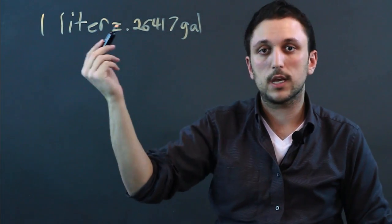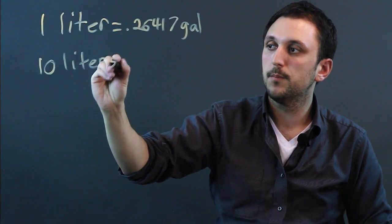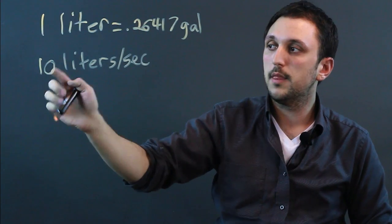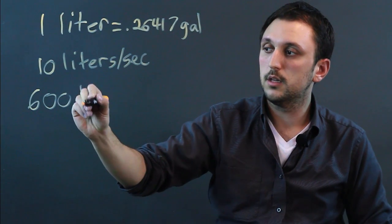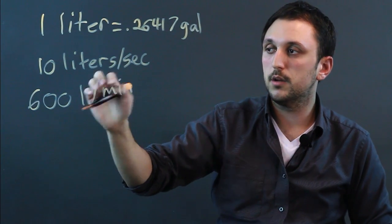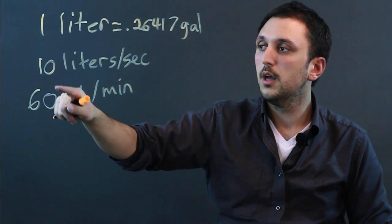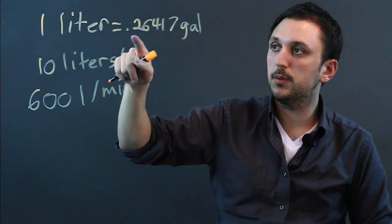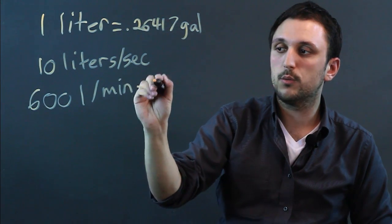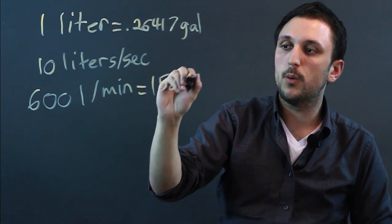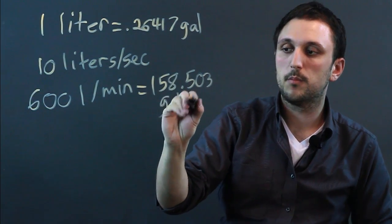Now if we want to do liters per second, let's say we're going 10 liters per second. So that would be about 600 liters per minute because there are 60 seconds in a minute, so we have to multiply 10 by 60. And in that case we're going to have to multiply 0.26417 by 600, which equals 158.503 gallons per minute.